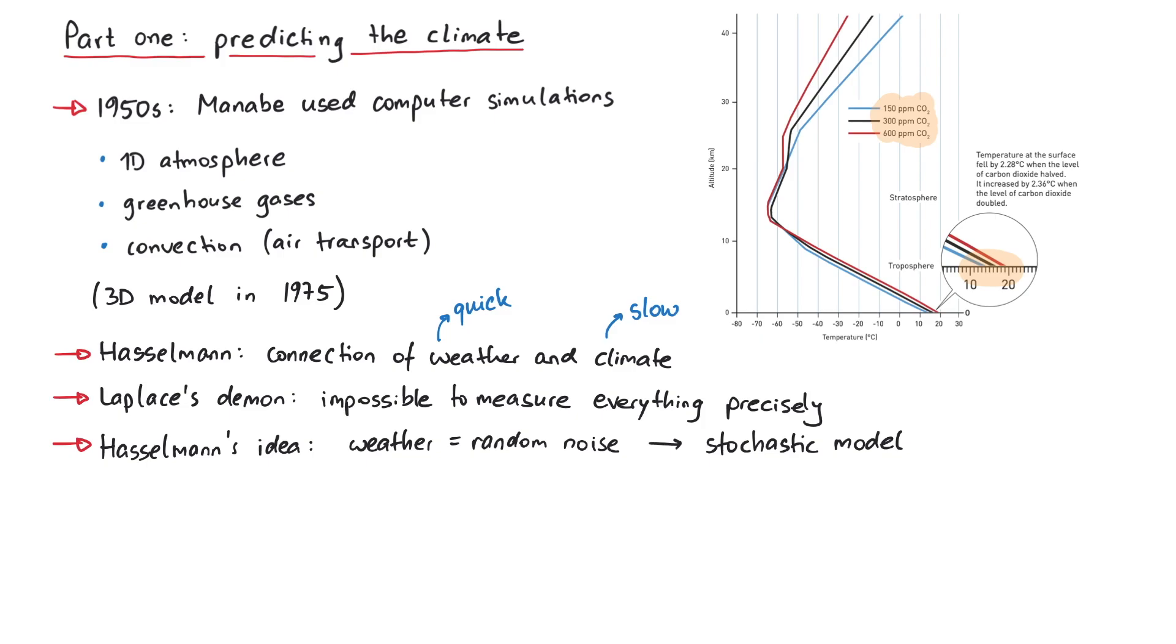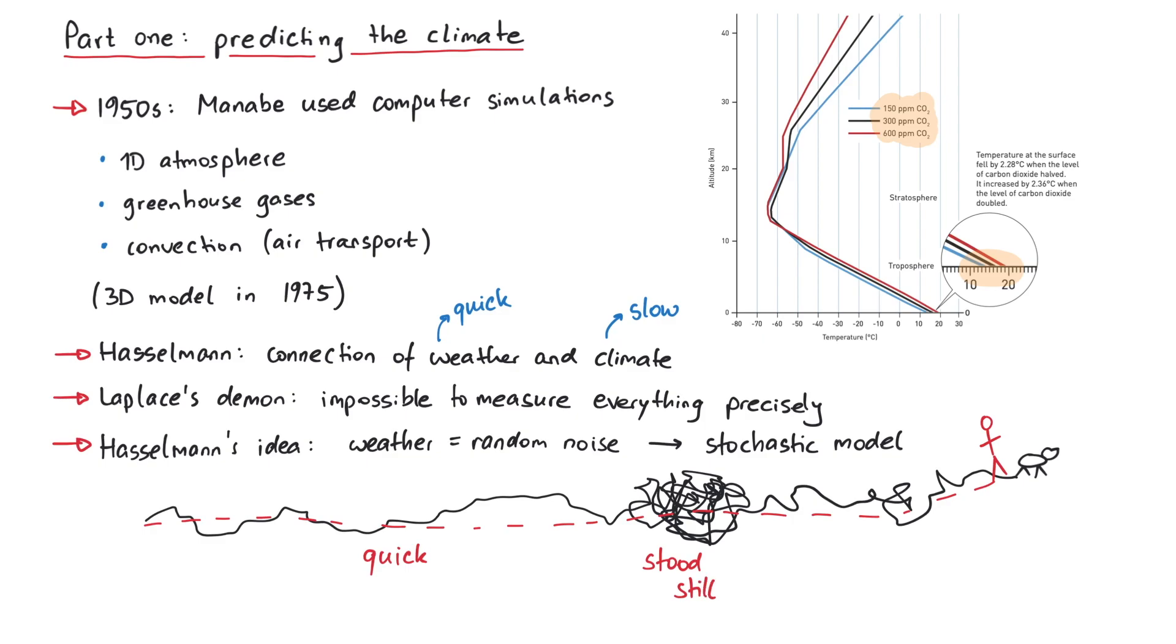To get an idea of how this works, imagine going on a walk with a dog in the snow. The dog running around you represents the rapidly changing weather and you represent the slow changing climate. By looking only at the dog's footprints in the snow, we can infer whether you moved quickly or stood still for some time. Hence, by looking at the weather, we can get information about the climate.